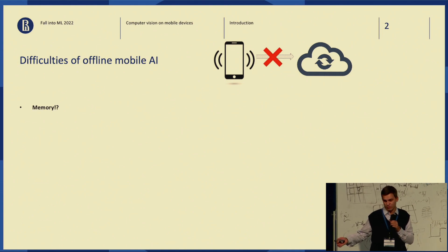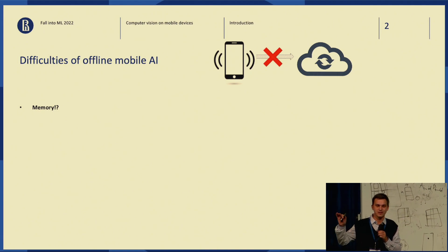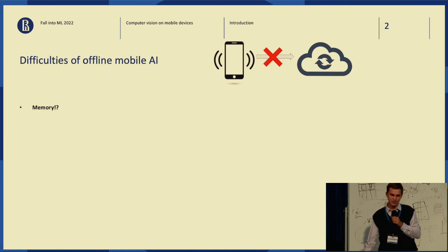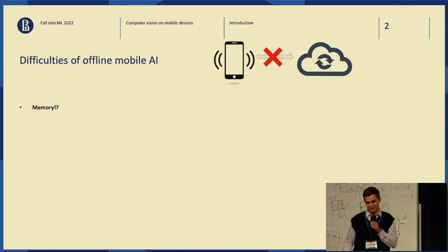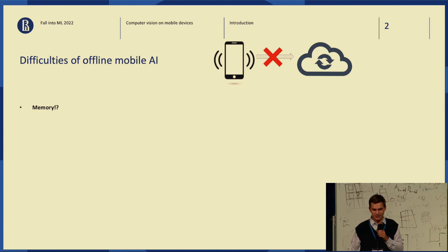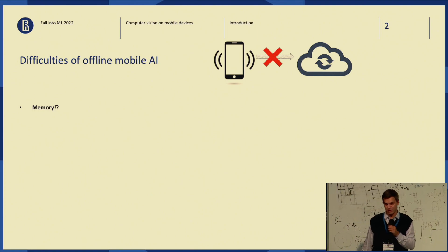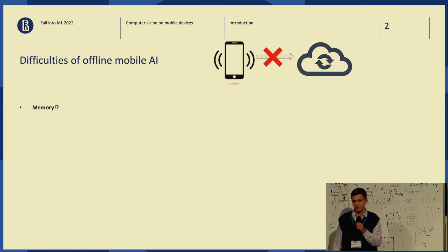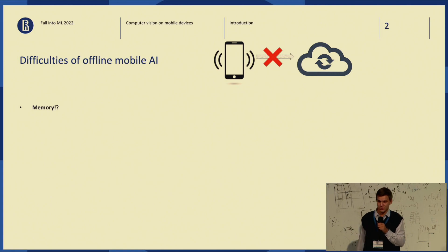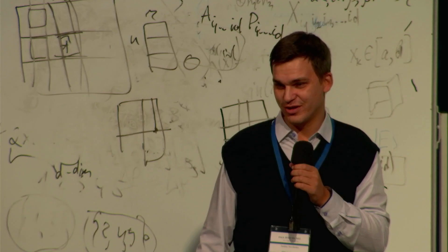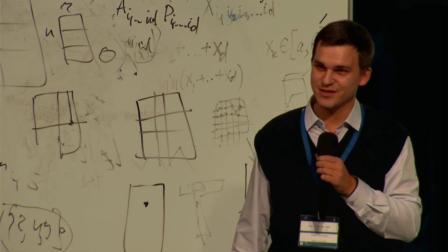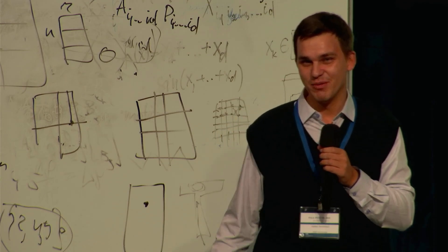Let's imagine that you have a brilliant, maybe state-of-the-art model for image classification in some particular task, and you want to implement this model on a mobile device and share it in your own mobile application for everyone. You will probably think about several issues. First of all, speaking about memory usage — we are not expecting a very large device, and maybe your vision transformer is really too large to fit in the memory of a mobile device.